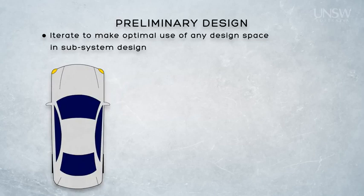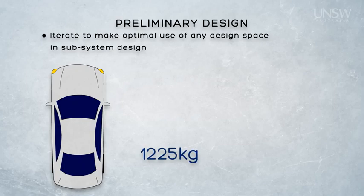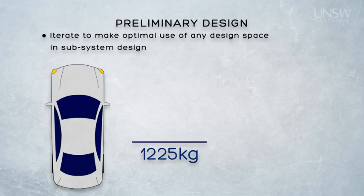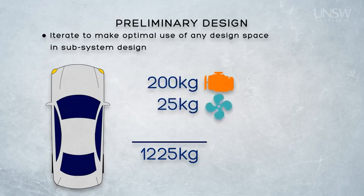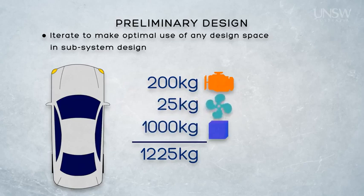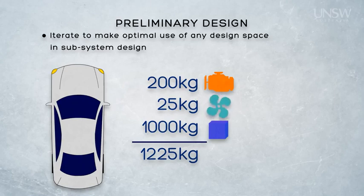Let's go back to the car and the air conditioner to illustrate the point. Let's say the weight of the car needs to be no greater than 1,225 kilograms — this may be a system-level requirement in the form of a constraint. During preliminary design, the systems engineers make some design decisions about how much of this 1,225 kilos each of the subsystems will be given. For example, we might allocate 200 kilos to the engine, 25 kilos to the air conditioner, and 1,000 kilos distributed amongst the rest of the subsystems.